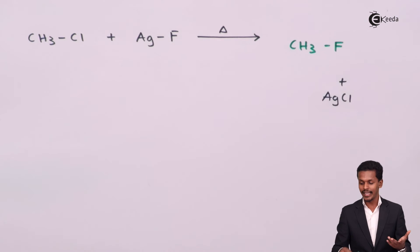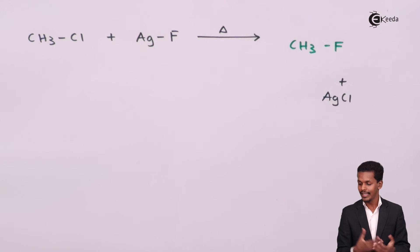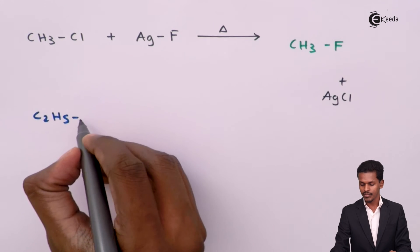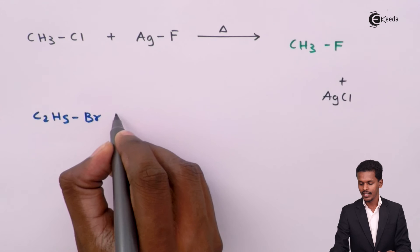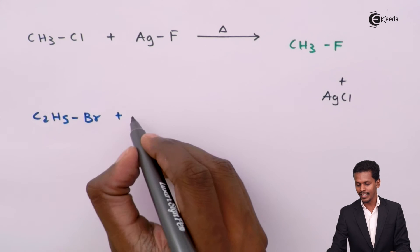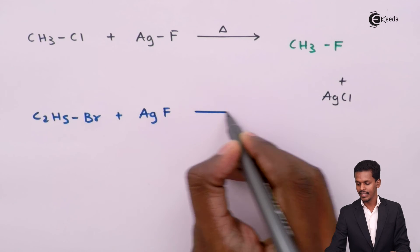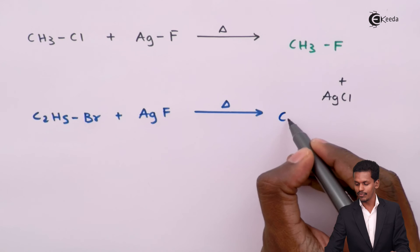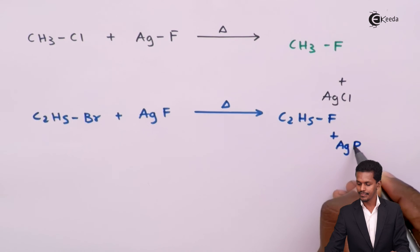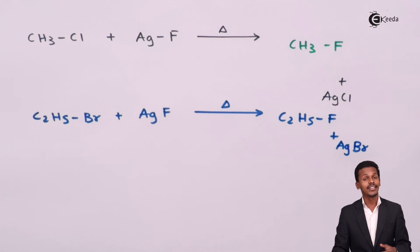You can also use different reagents to obtain an alkyl fluoride. For example, C2H5Br reacted with AgF on heating gives C2H5F (ethyl fluoride) along with AgBr as the byproduct.